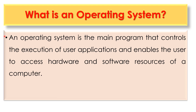Let us define what an operating system is. An operating system is the main program that controls the execution of user applications and enables the user to access hardware and software resources of a computer. It is the main software that controls the execution of user applications such as word processors, spreadsheets, and PowerPoint.